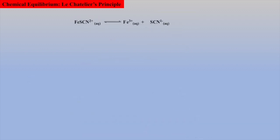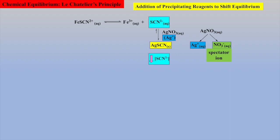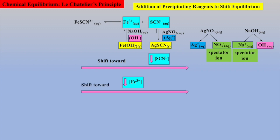Let's examine one more equilibrium where we add a precipitating reagent to shift the equilibrium. For example, for the following equilibrium, one could add a solution of silver nitrate — a source for silver ions — to precipitate the thiocyanate ion as solid silver thiocyanate. By removing the thiocyanate ion from this equilibrium, the equilibrium will shift to the right. Thus, exploiting our knowledge of solubilities can also affect an equilibrium.